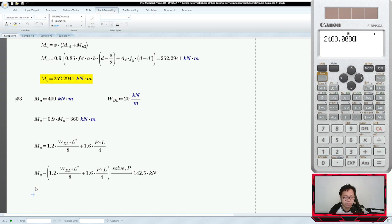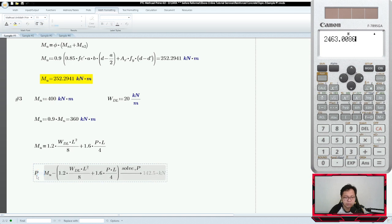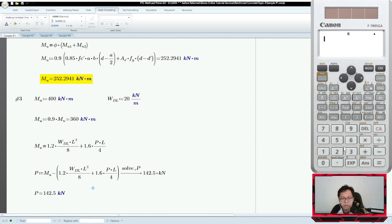This is kN per meter. So our P is actually 142.5 using your calculator. Please use your calculator when solving. Double check using our calculator: MU is 360, that equals 1.2 times 20 times 5 squared over 8 plus 1.6 times - put x for P - times 5 over 4. Shift solve. Always give an answer close to the value, or you can use zero. So you'll have 142.5.